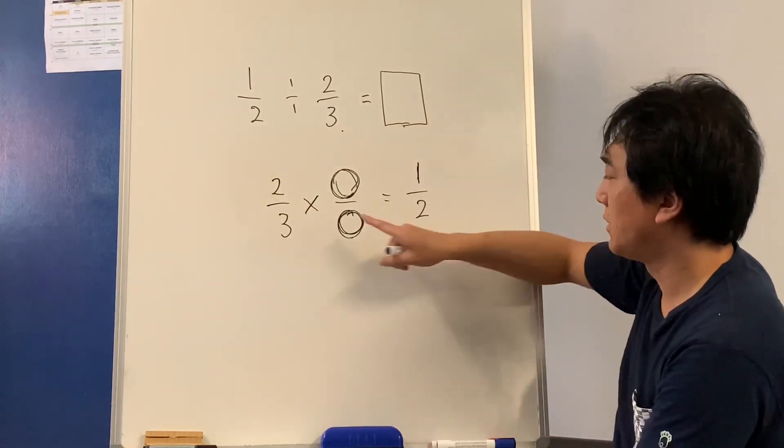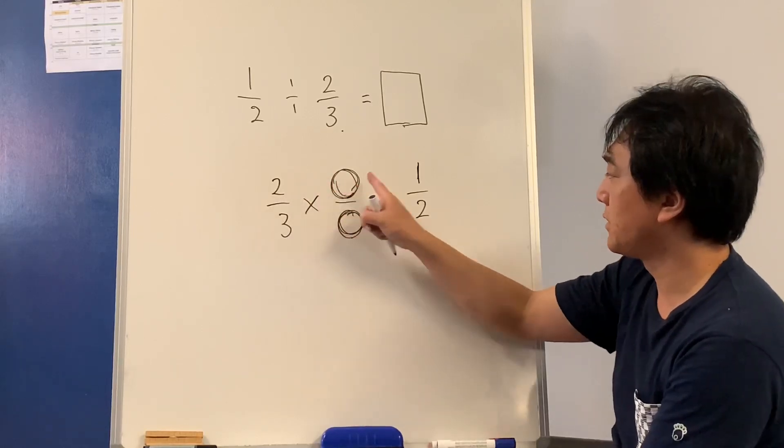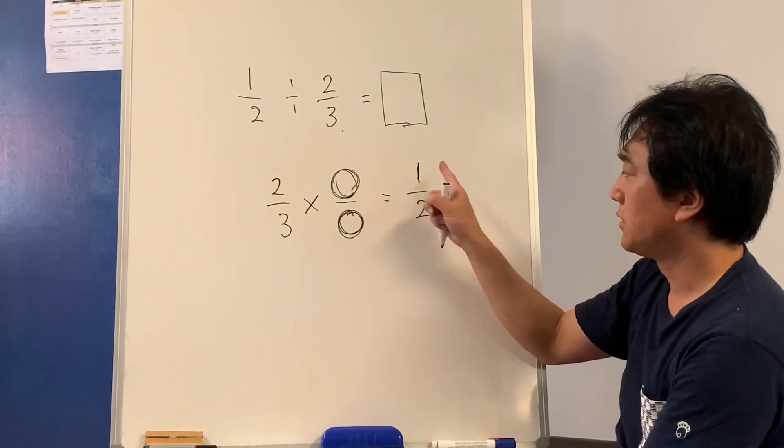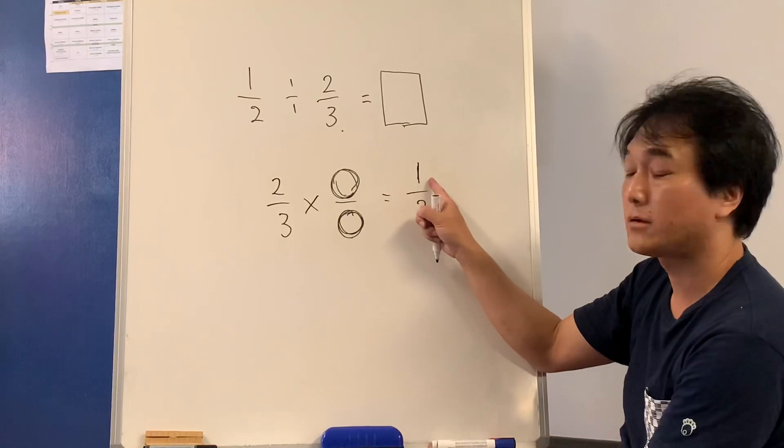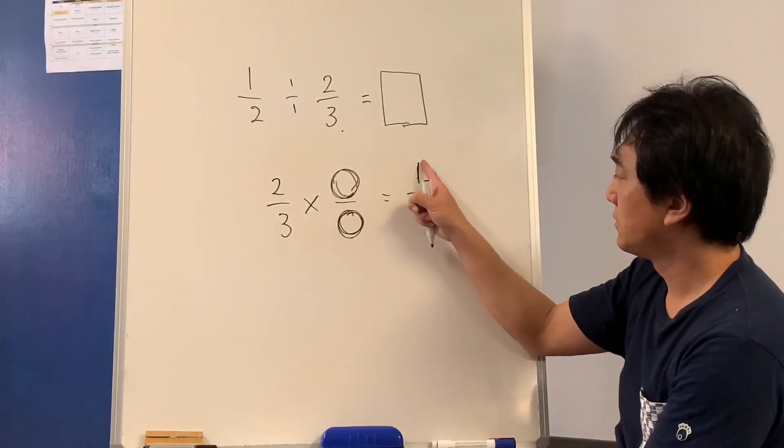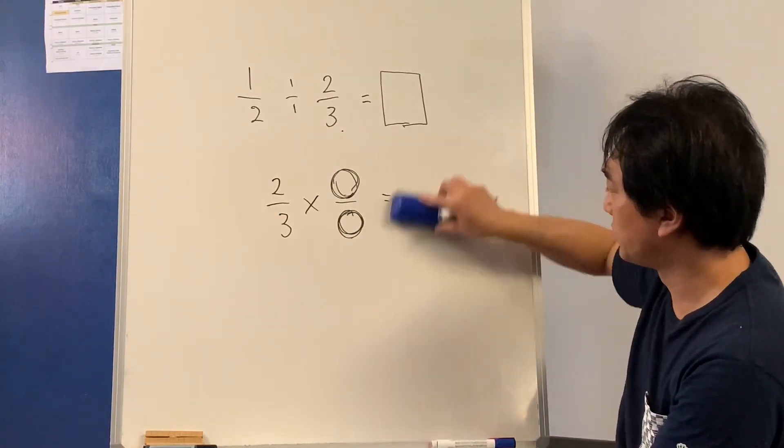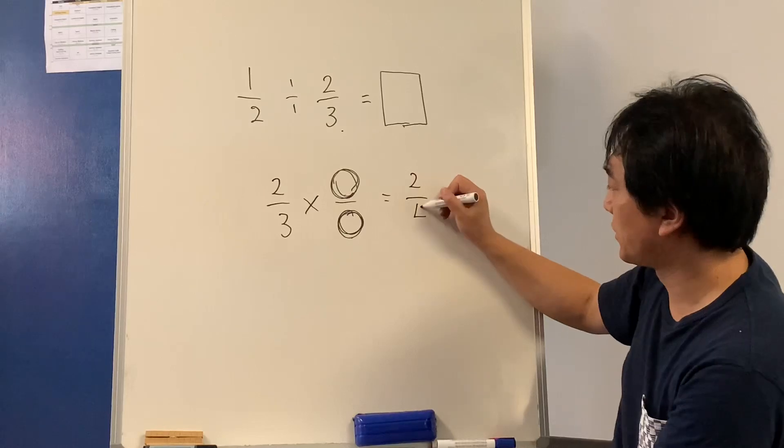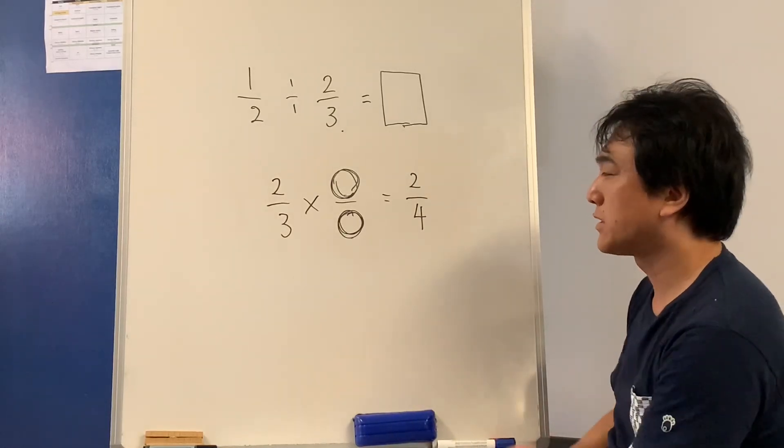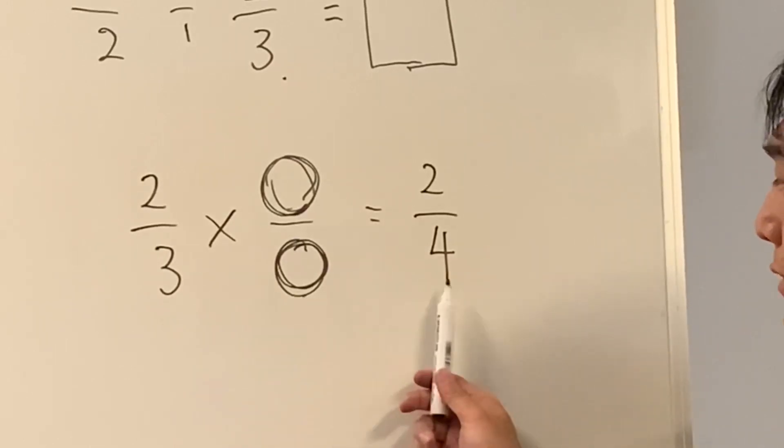The answer is one. Now if we multiply these two numbers, that has to be the answer. So this cannot be one, can it? So what you can get here, instead of one half, let's see if we can use equivalent fraction of two. So two quarters. Two quarters still doesn't work because three times something cannot be four.